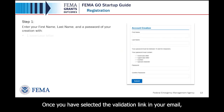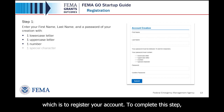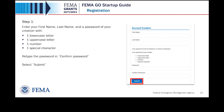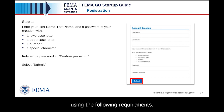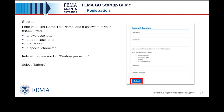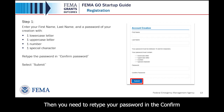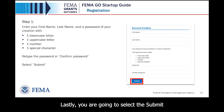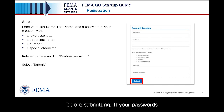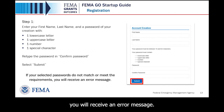Once you have selected the validation link in your email, you will be taken to the account registration step. To complete this step, enter your first and last name on the account creation page, then create a password using the following requirements: one lowercase letter, one uppercase letter, one number, and one special character. Retype your password in the confirm password section, then select the Submit button. Please make sure your passwords match before submitting — if they do not match or meet the requirements, you will receive an error message.